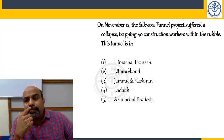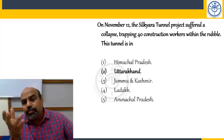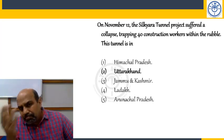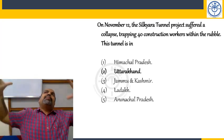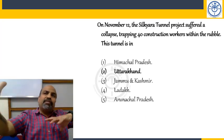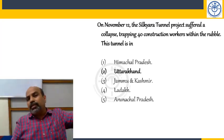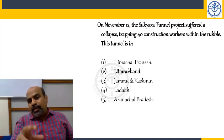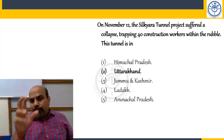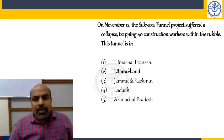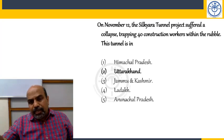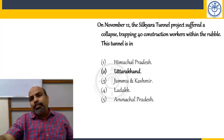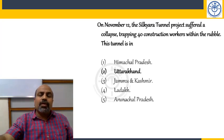The Silkyara Tunnel project in Uttarakhand suffered a collapse, blocking 41 workers inside near Uttarkashi. They could potentially be freed soon.